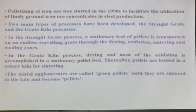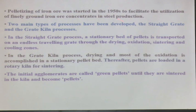Pelletizing of iron ore is not a very new technology — it was started in the 1950s to facilitate the utilization of finely ground iron ore concentrates in steel production. Two main types of processes have been developed: the straight grate and the grate-kiln processes. These are mainly for the firing purposes, not for the balling or grinding purposes.